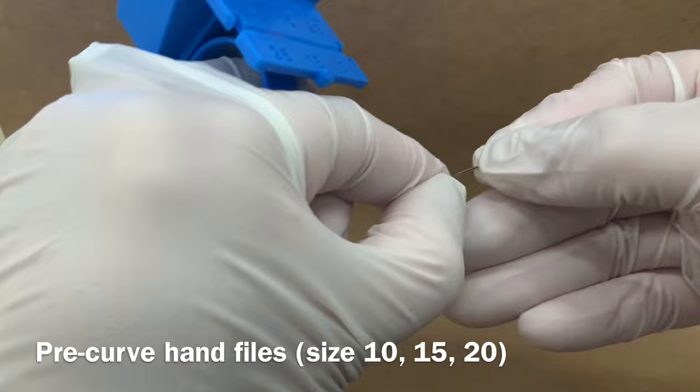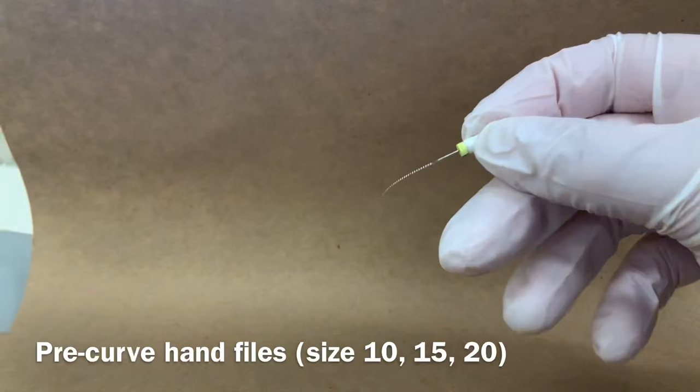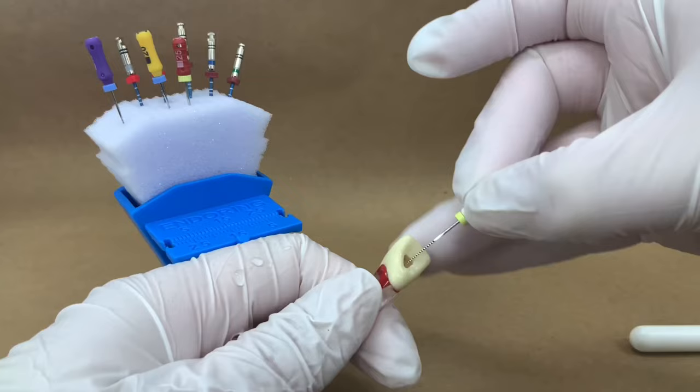A good tip is to gently pre-curve these smaller hand files. Pre-curving the file allows you to negotiate the curvature within the canal and prevent ledge formation and apical transportation.